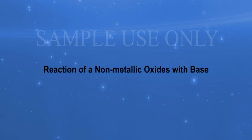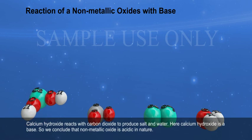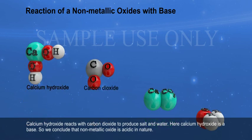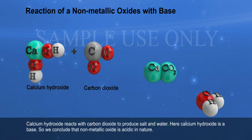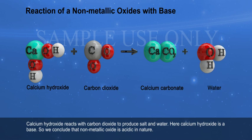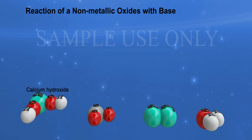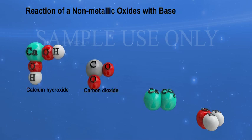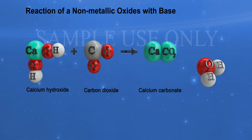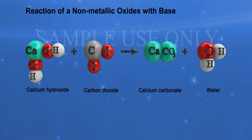Reaction of a Non-Metallic Oxide with Base: Calcium Hydroxide reacts with Carbon Dioxide to produce salt and water. Here, Calcium Hydroxide is a base. So, we conclude that non-metallic oxide is acidic in nature. Ca(OH)₂ plus CO₂ gives CaCO₃ plus H₂O.